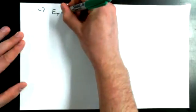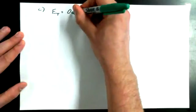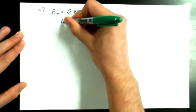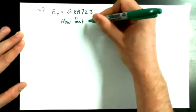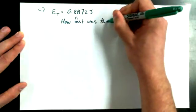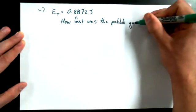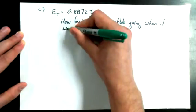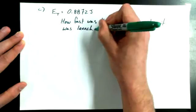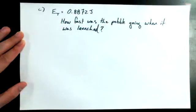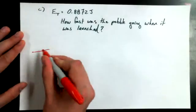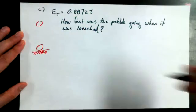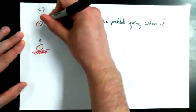So we're going to write down the total energy again. You don't have to write it because you already have it on your page, but I'm going to write it again just so I have access to it on the screen. 0.8872 joules. And here's the question. How fast was the pebble going when it was launched? And again, the picture is that we've got this ground level. We've got a pebble. It goes up to its maximum height.